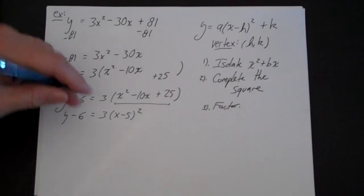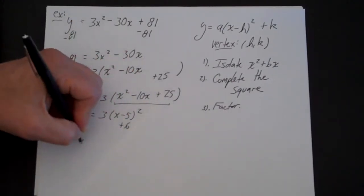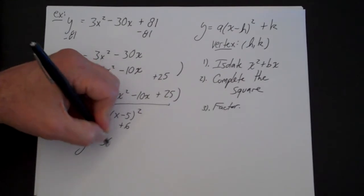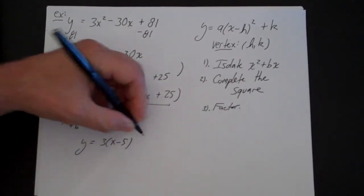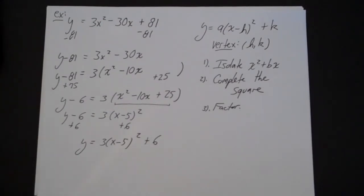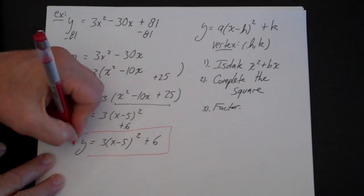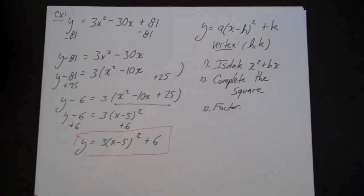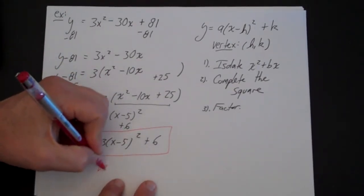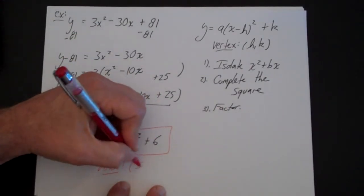And the last step, I'm just going to move this 6 back. And that's my final answer right there. And let's talk about why this is useful. We can read this. This is a parabola, and the vertex here is going to be 5 comma 6.